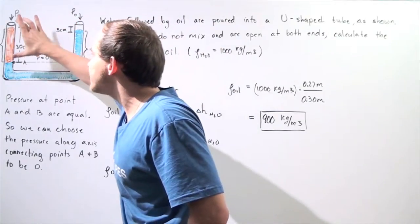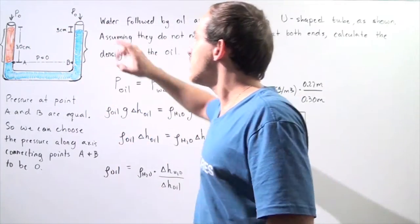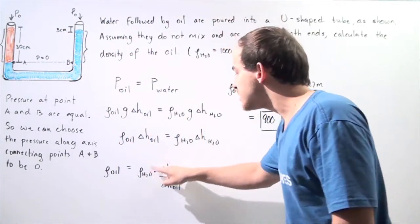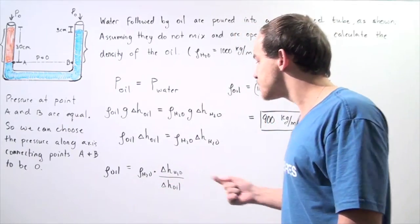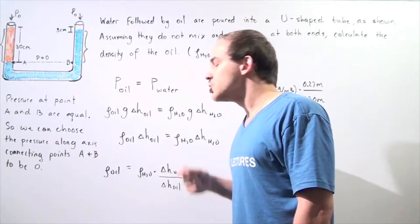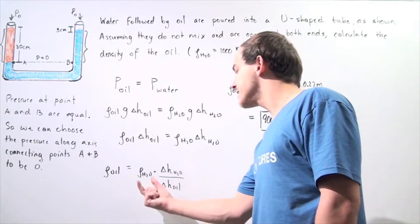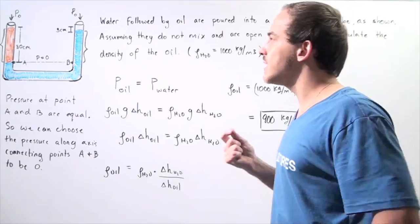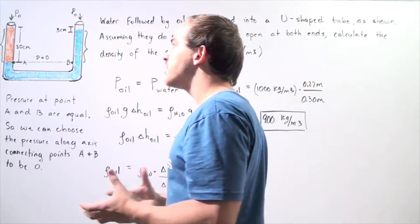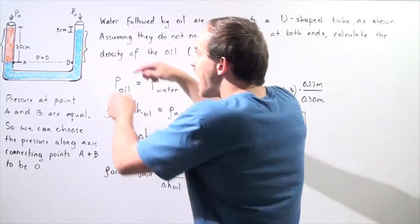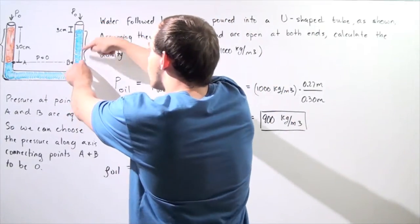And notice because the oil's distance is higher than the water's distance, this fraction will be less than 1. And so that means the density of oil should be less than the density of water. And that makes sense because it requires more oil to create the same exact pressure as created by this water.